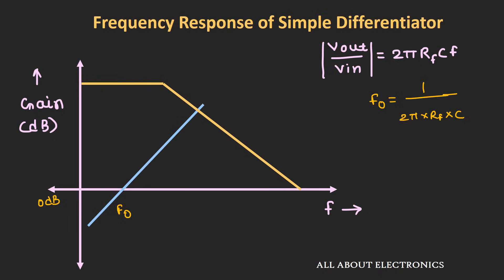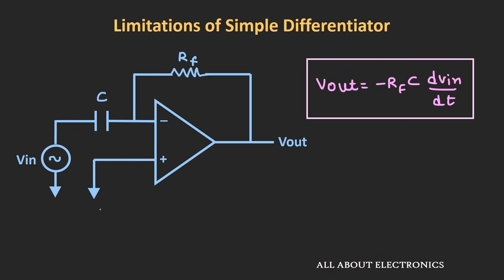This means the differentiator is very sensitive to high frequency noise. Even if your input signal is a low frequency signal, the high frequency noise will see more gain than the input signal frequency. Additionally, the input impedance equals the reactance of the capacitor, which reduces as frequency increases, causing the input impedance seen by the source to also reduce. So the two limitations are: (1) input impedance reduces with frequency, and (2) high sensitivity to high frequency noise.